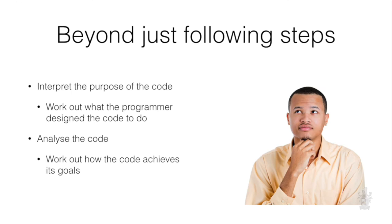When we go through hand execution, some of the things you might want to do as you're going through it: while it is a mechanical process to execute the code, we can also try to understand the code more deeply. What was the purpose of this code? This code was written by a programmer — they had some purpose, they wrote it for some reason. So what does it do? Why are these instructions provided? What does this sequence mean? We can analyze the code we're reading to try to work out how it achieves goals. If I know what the task is supposed to be doing but I don't understand how it's doing that, then when I read through the code and work out what it's doing, I'm analyzing it to work out how it achieves those goals.